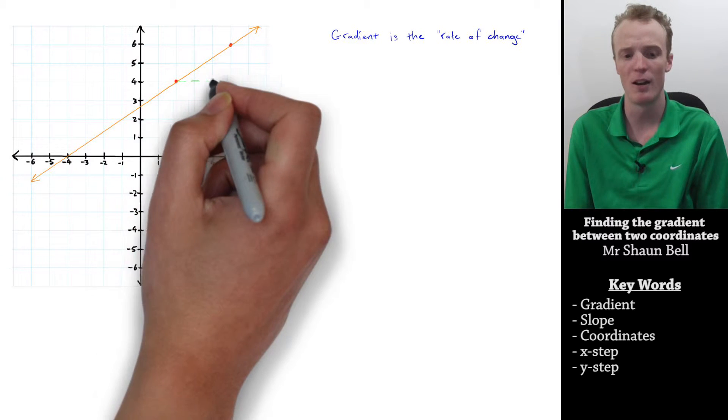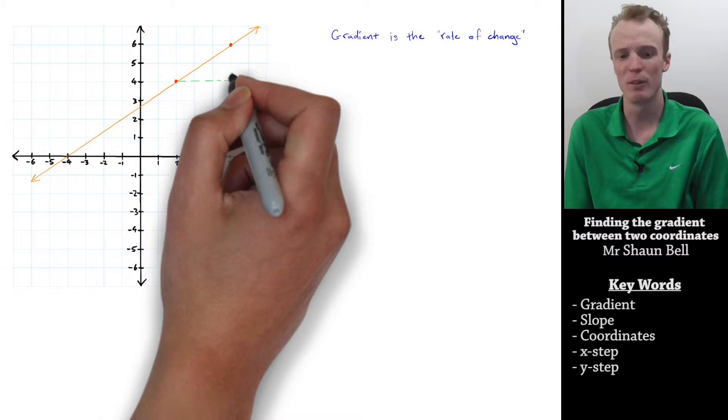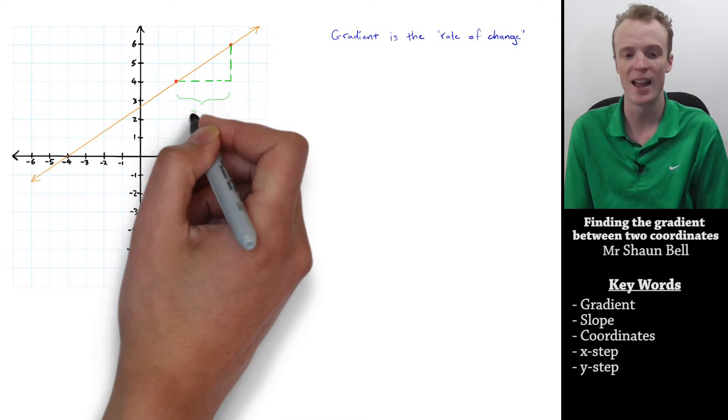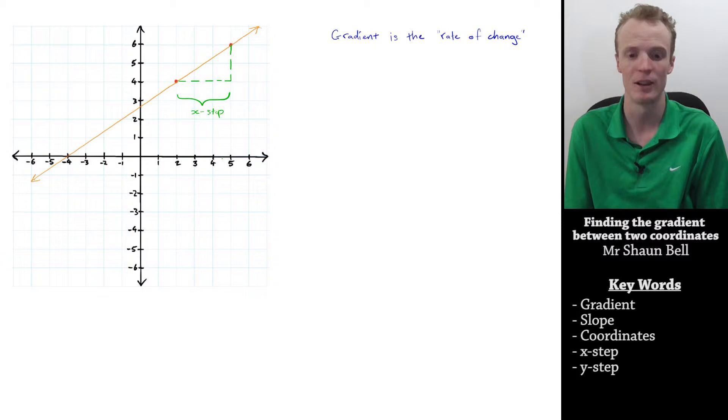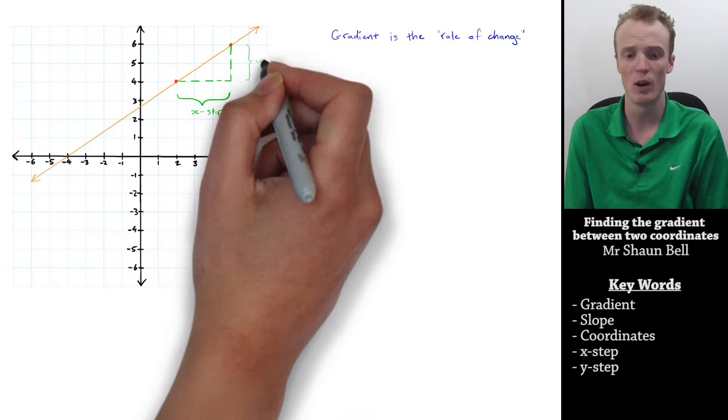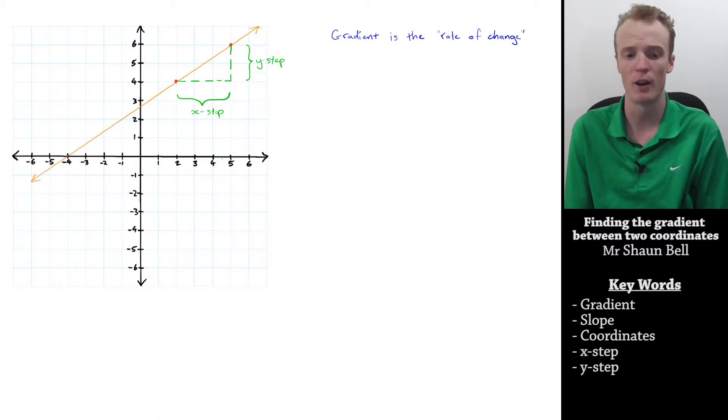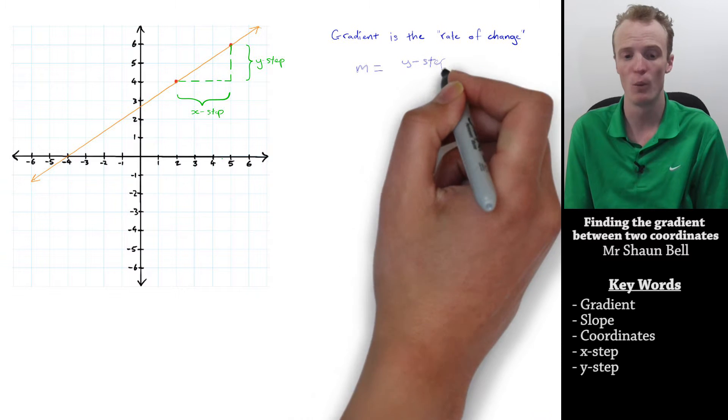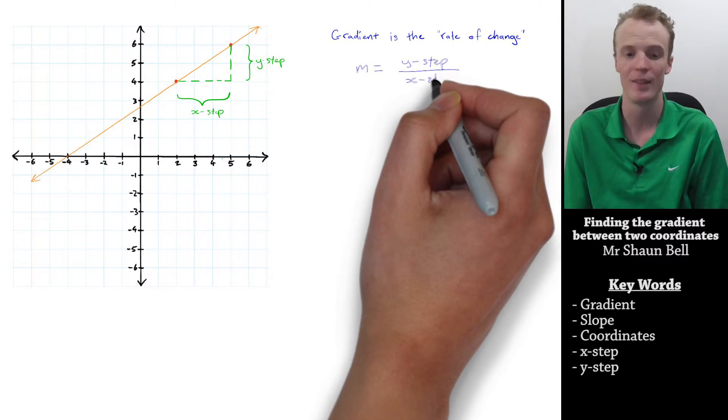If we look on a graph that I've got here, we can break down the journey between the two coordinates as an x step, or how far we've travelled in the x direction, and as a y step, which is how far we've travelled along the y direction. Now, the gradient is a measurement of the y step divided by the x step.